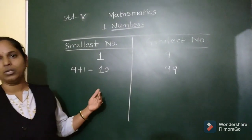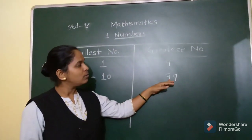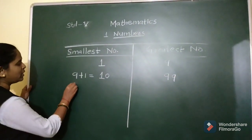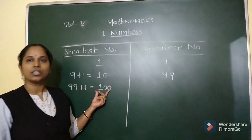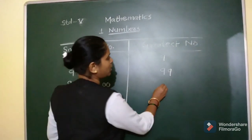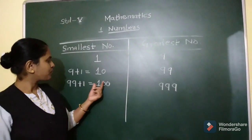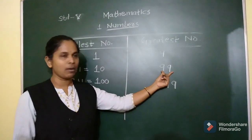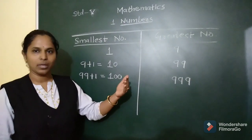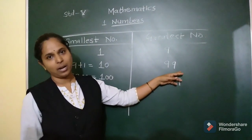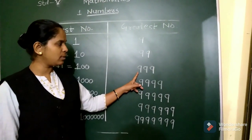Next, we want to find out the smallest three-digit number. For that, we have to add 1 to the greatest two-digit number. That is 99 plus 1, which is 100. So 100 is the smallest three-digit number. The greatest three-digit number is 999. If you observe carefully, the successor of the greatest number is the next smallest number. The successor of 99 is 100.